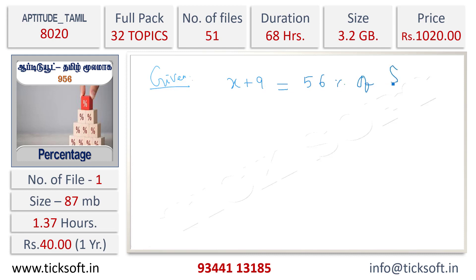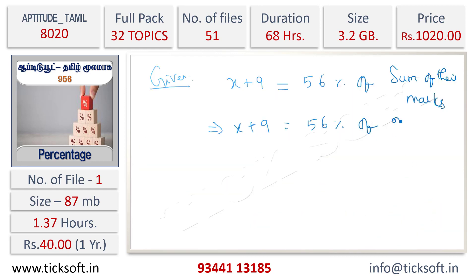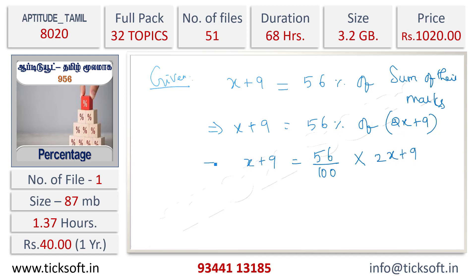This implies x plus 9 is equal to 56% of the sum of their marks, which is 2x plus 9. We know that x percent of any value is expressed as multiplication, so 56% of 2x plus 9 gives us our equation.